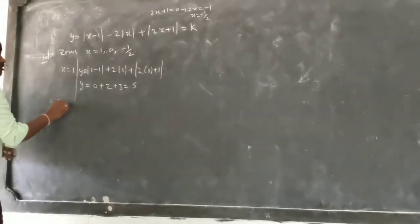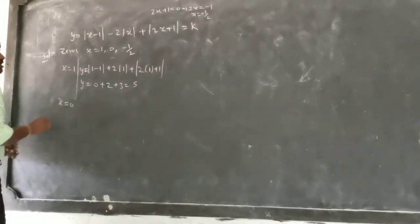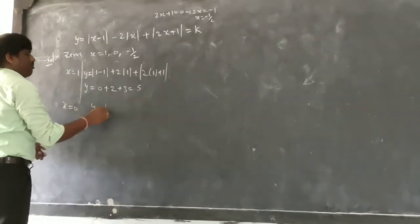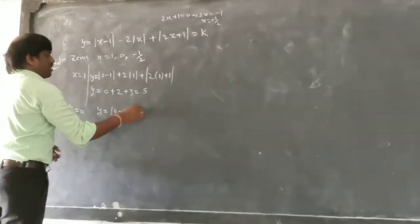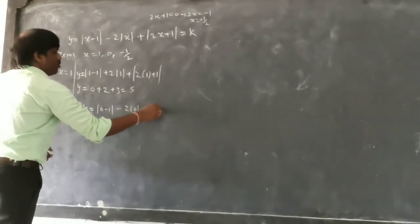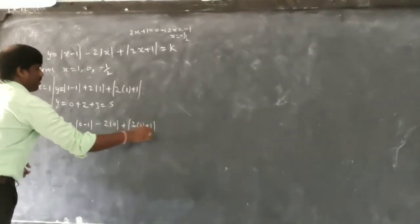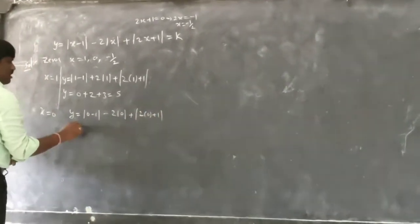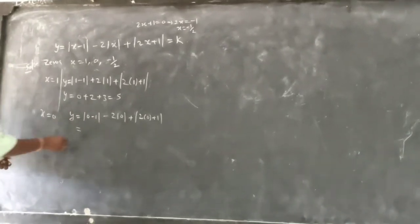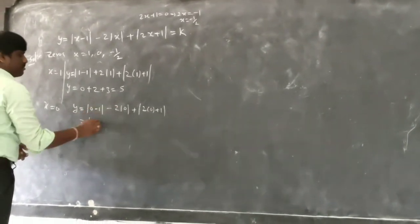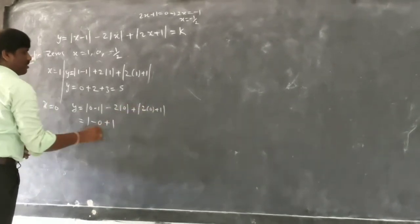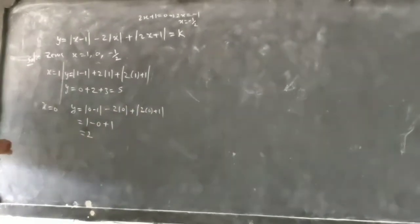Let us take x equal to 0. y equals mod(0-1) minus 2·mod(0) plus 2·mod(0+1), which gives mod(-1) minus 0 plus 2·1, that is 1 plus 0 plus 1, so y equals 2.